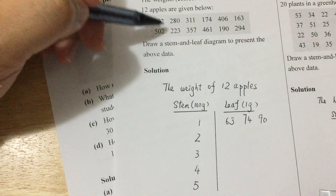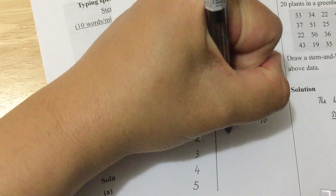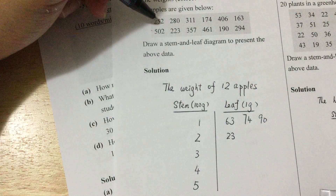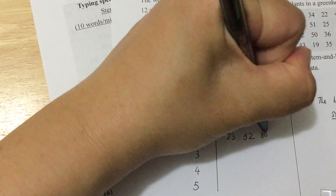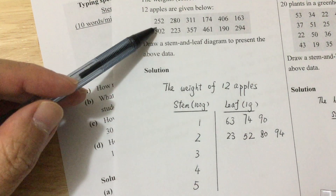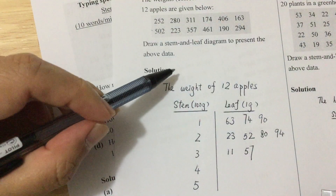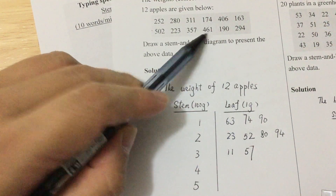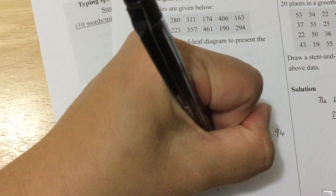We write 3 numbers here. For 2, you have 4 numbers: 1, 2, 3, 4. So the smallest one is 223. So why don't we write down 23 here for the first. And then 52 will be the second one, 80 will be the third one, and 94 will be the last one. Now next, for the third one — the 3 — you will have 2 leaves: 311 and 357. So 11 will be the smallest one and 57 will be the next. For 4, you will have 2 numbers: 406 and 461. So why don't we write 406 and 461 here. But the last one, you have only 5 with only 1 — it's 502. So we write down 02 here.